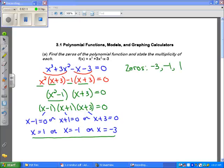Since each of these factors only occurs one time, the multiplicity would be 1 for each. So this concludes this first part of 3.1.